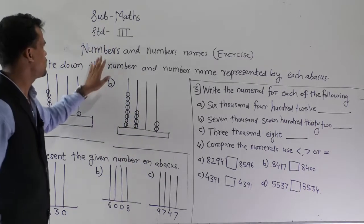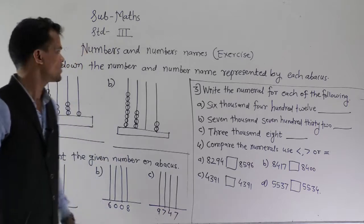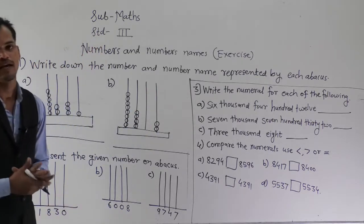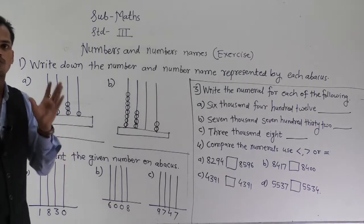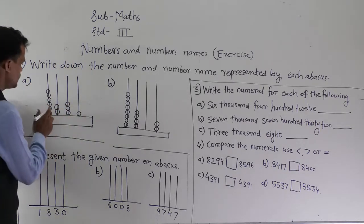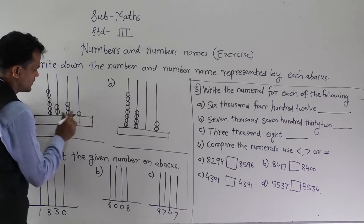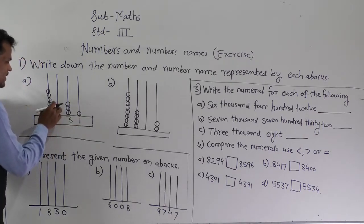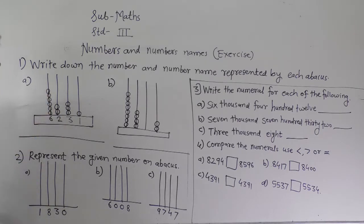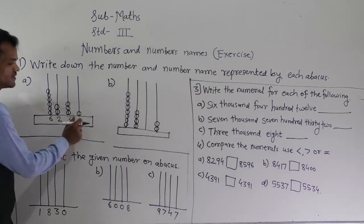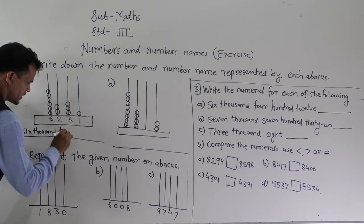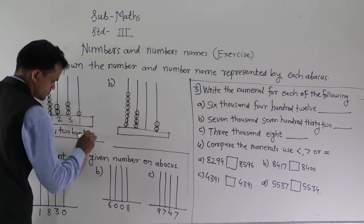Today we will solve the exercise on numbers and number names. The first question asks us to write the numeral and number name represented by the abacus. At the ones place, one bead is there; at the tens place, three beads; at the hundreds place, two beads; and at the thousands place, six beads. So this number is six thousand two hundred thirty-one.